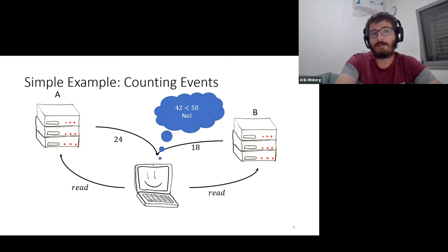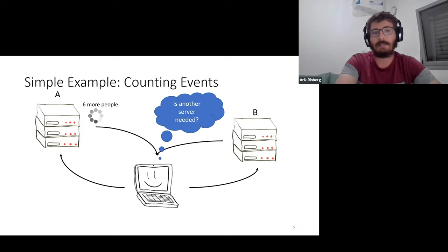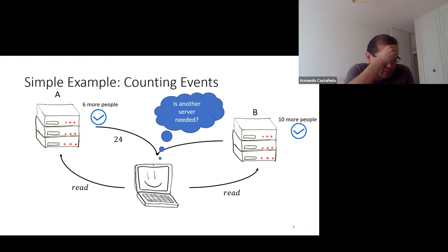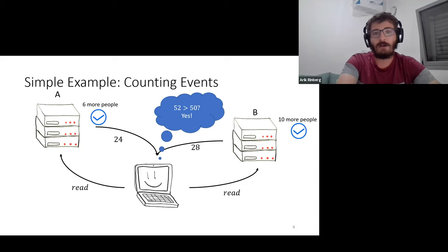What happens when things start happening concurrently? Six people connect to server A and it begins handling these new connections. In parallel, the controller begins reading the counter on server A. Server A hasn't finished handling the connections, so it still returns 24. It then finishes handling the connections and 10 people begin connecting to server B. The controller then reads the counter at server B. Server B finishes handling the connections, so it returns 28 more than previous. So the controller sees 52 people and knows it needs to spin up another server.